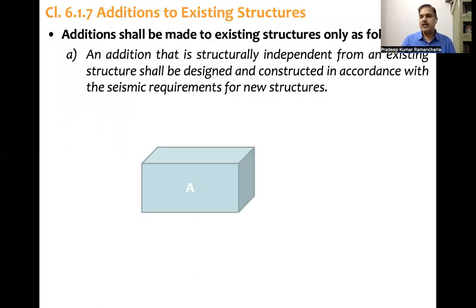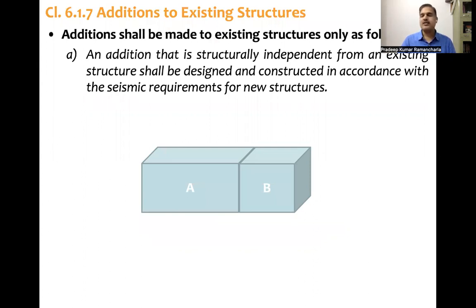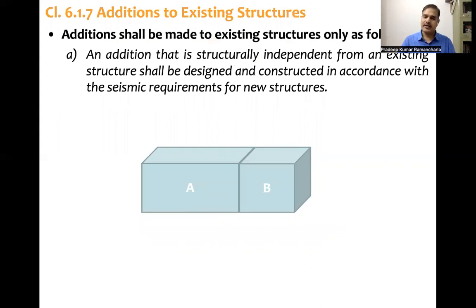So A is the old structure and B is the new structure. Block B is structurally independent but is an addition to structure A — structurally independent but functionally may be the same building, with movement possible from A block to B block. The code says block B, or the addition, should be constructed as per the seismic requirements of B completely.